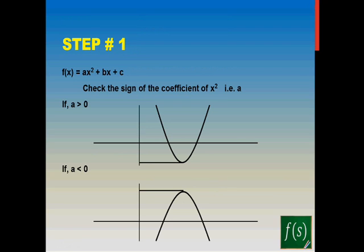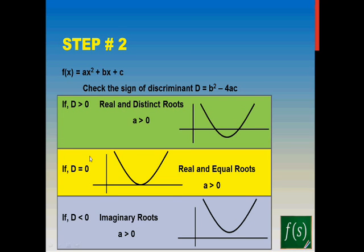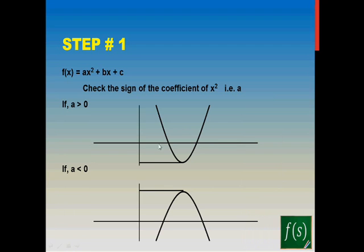So how do you go about plotting the graph? Step 1: check for the sign of the coefficient of x², which is 'a' in the general expression. If your 'a' is positive, your graph will open upwards. If your 'a' is less than zero, your graph will open downwards. This is how the shape looks for a < 0 and for a > 0.